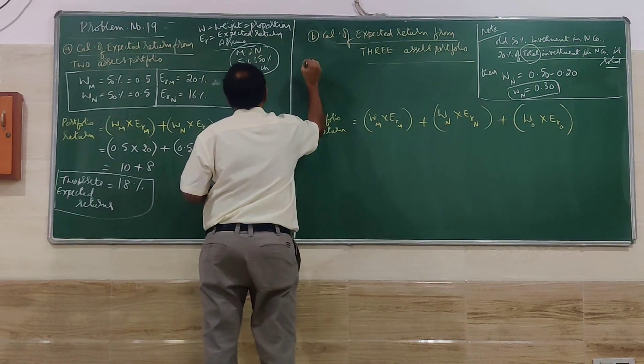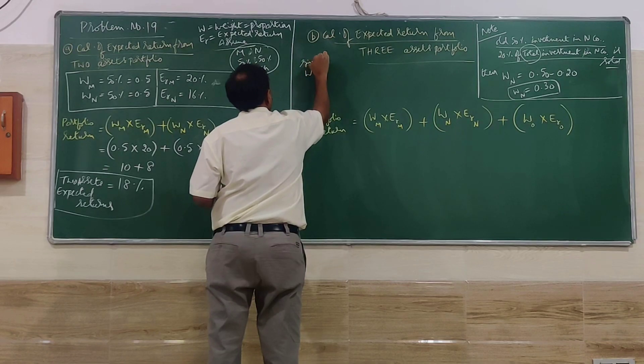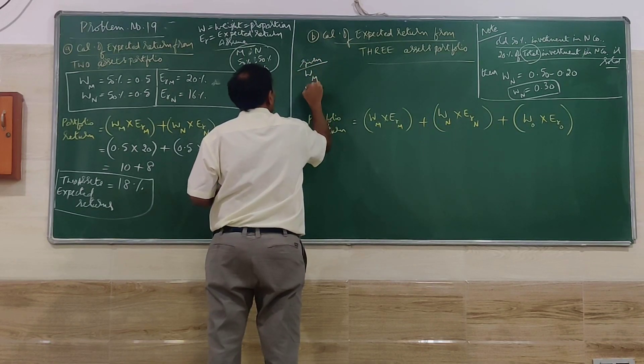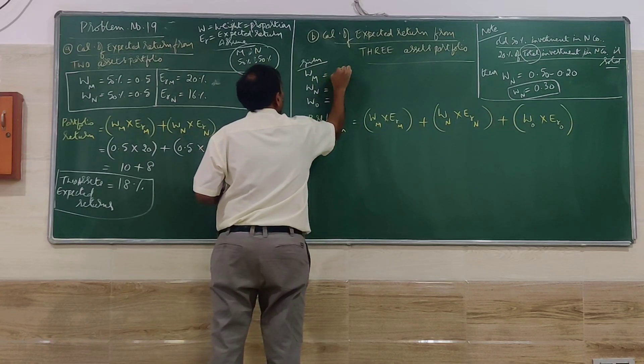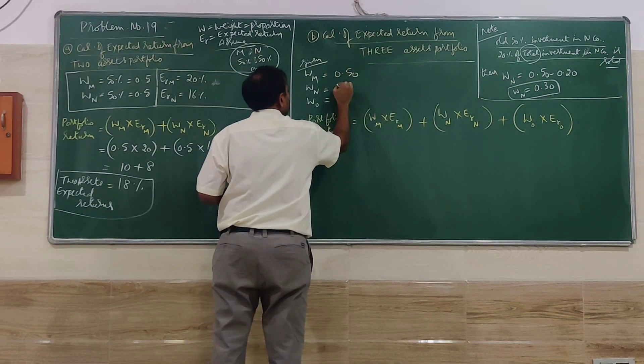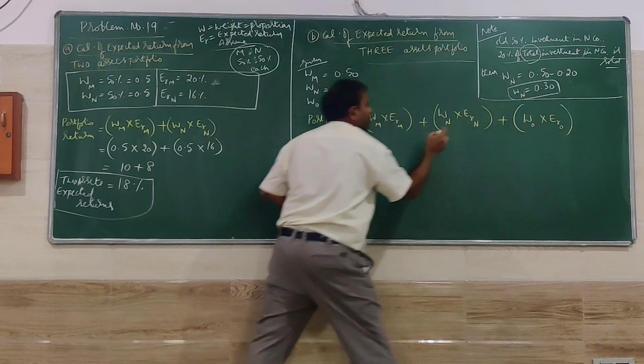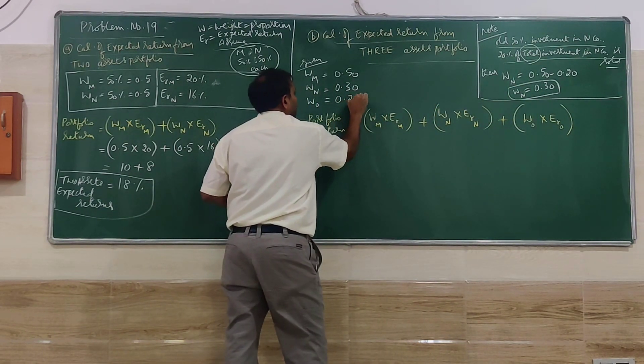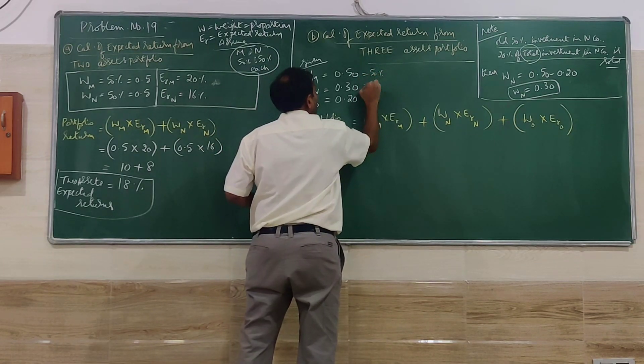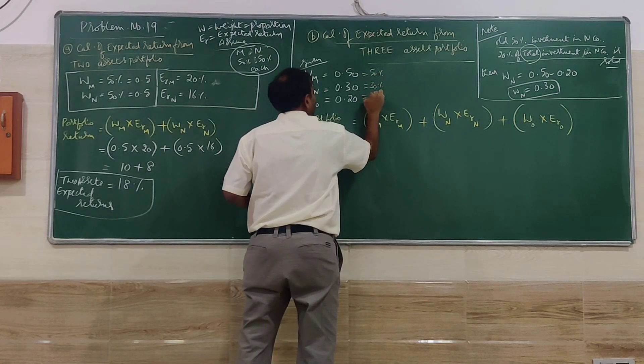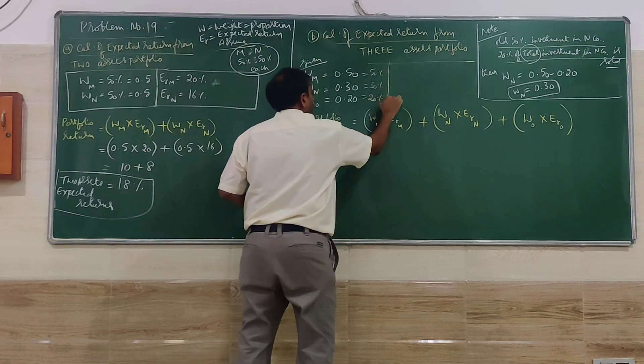Now let's see the given information. W_M, W_N, W_O. M remains the same at 50%, N is now 30%, and the new investment is 20%. So 50%, 30%, and 20%—that's the first part.